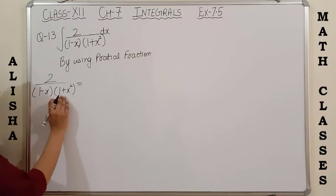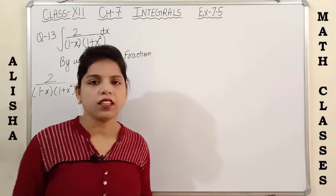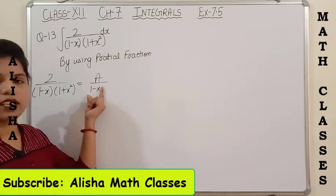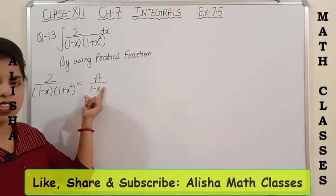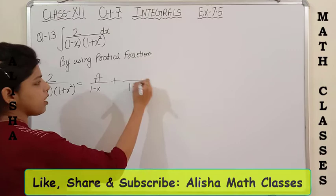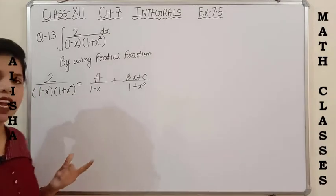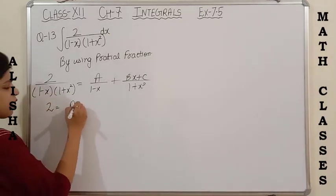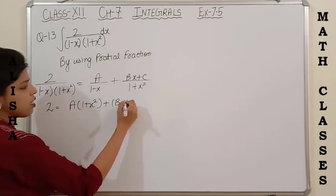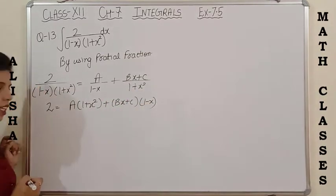One is a linear factor and one is a quadratic factor. You have to always take one degree less than the denominator. Since this is a linear factor of degree one, we take a constant A in the numerator. The second is a quadratic factor, so we take a linear expression Bx plus C in the numerator. Now we find the values of A, B, and C by taking LCM using the shortcut cross-multiply method.